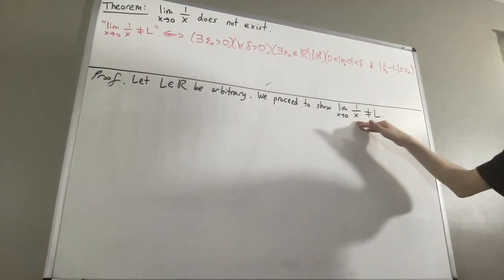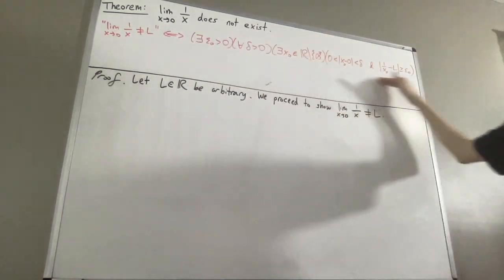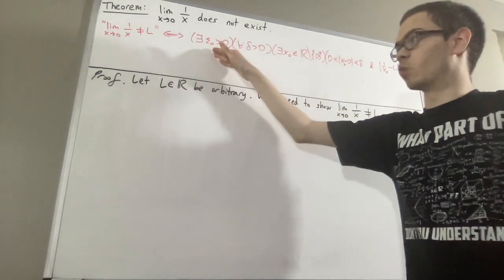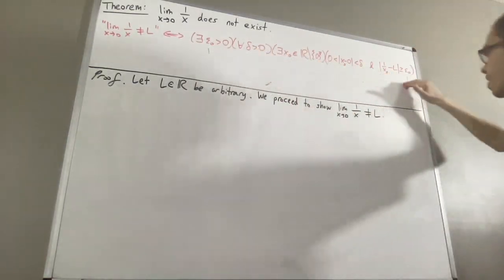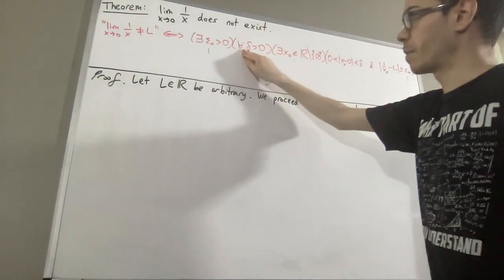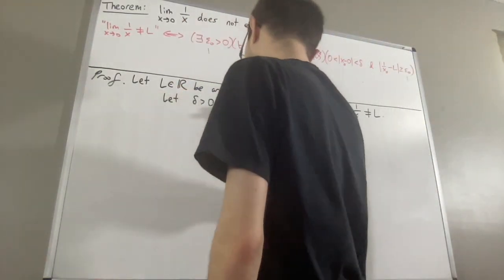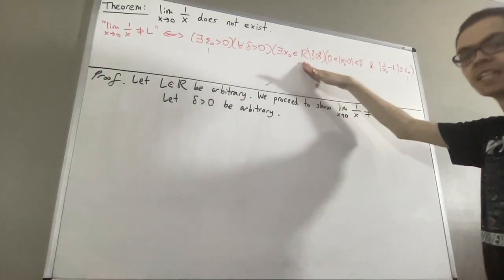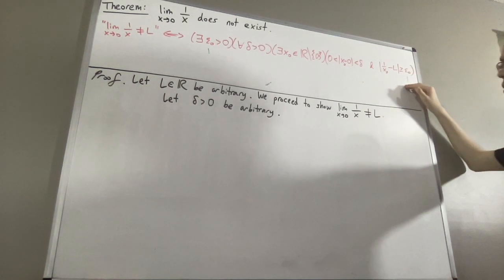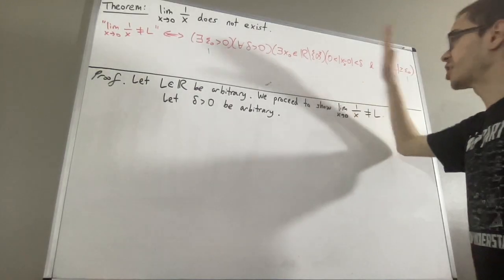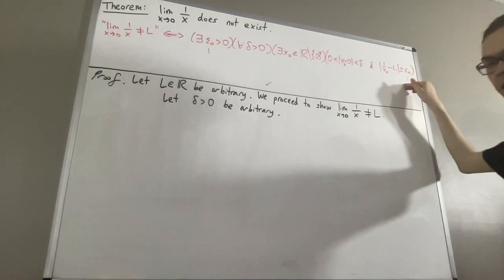To prove the limit is not equal to L, we want to prove that this statement is true. Our choice of epsilon naught is going to be 1. With this choice of epsilon naught, and since we're trying to prove a statement about every delta greater than 0, let's give ourselves an arbitrary delta greater than 0. From here, we want to find an x naught such that this happens — we need x naught small enough so that the distance between 1 over x naught and L will be greater than or equal to 1.